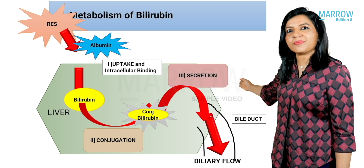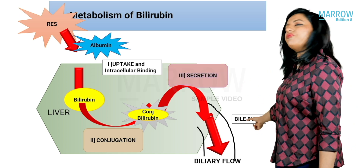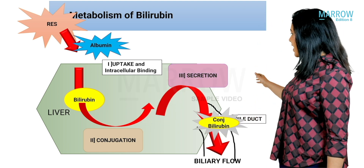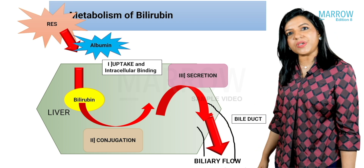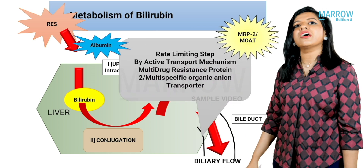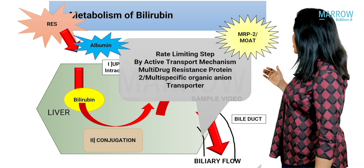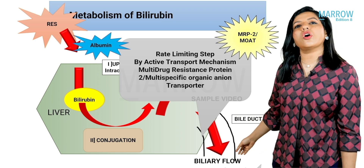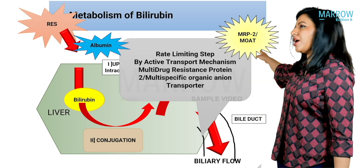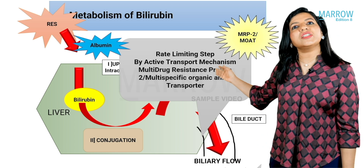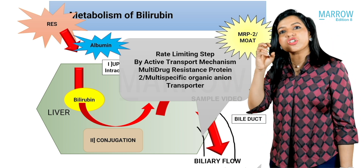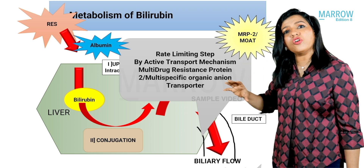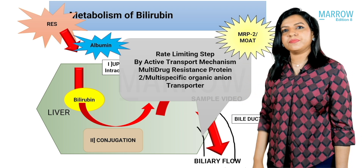The third step is secretion — an active process whereby conjugated bilirubin is secreted into the bile duct. The transporters involved are called multidrug resistance protein 2 (MRP2), also known as multispecific organic anion transporter (MOAT). This active secretion is the rate-limiting step of the entire heme catabolism pathway.